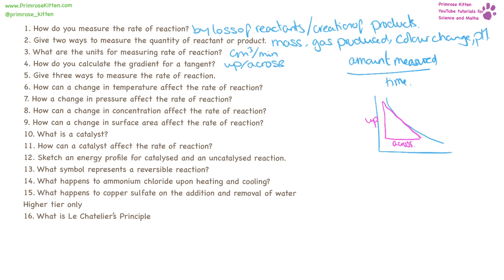Three ways to measure the rate of reaction. That's going to be ways to measure the quantity of a reaction. That can be color change, mass loss or mass gained, that can be gas produced.